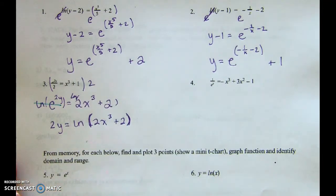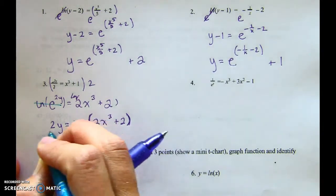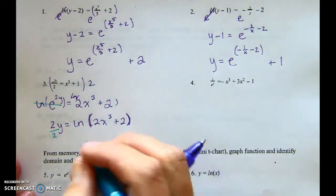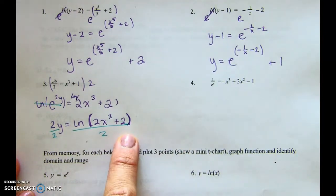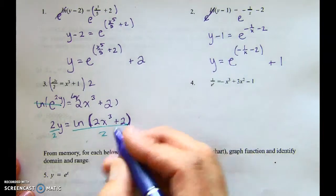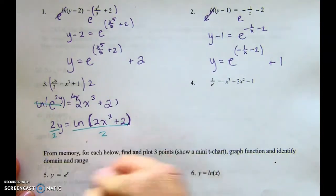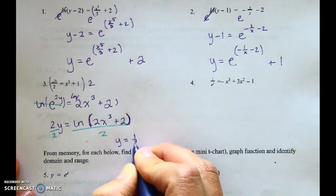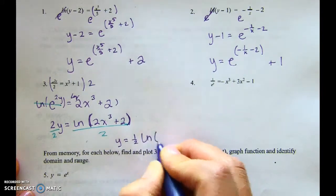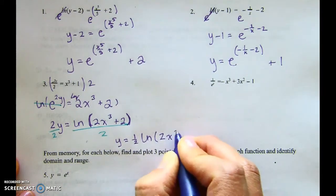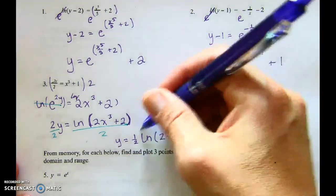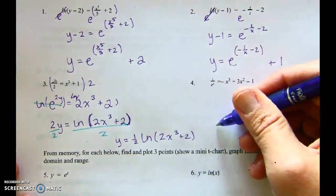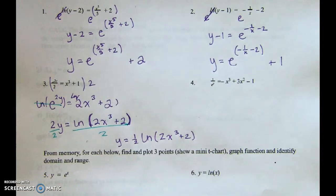To get Y by itself, divide both sides by 2. In upper-level math we write it as: Y equals one-half times the ln of (2x³ + 2). So it's one-half as a coefficient in front. You could move that up as a power or write it as a square root, but we'll leave it in front — that's fine.